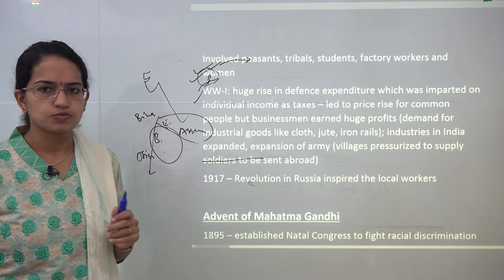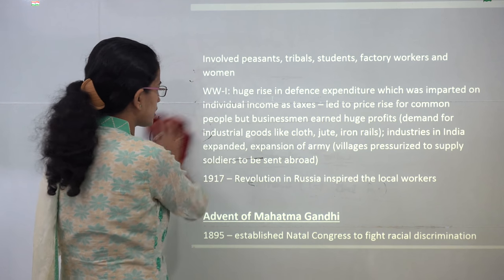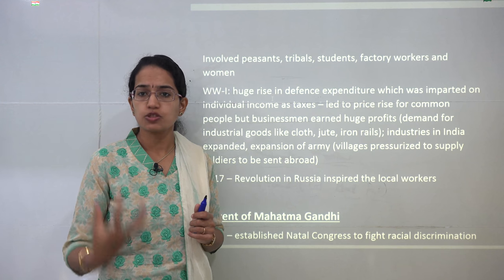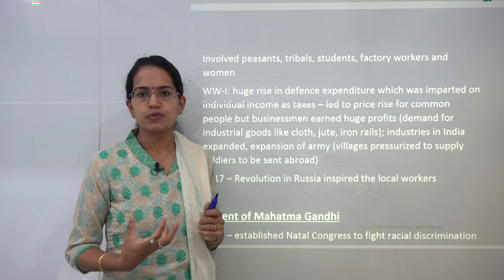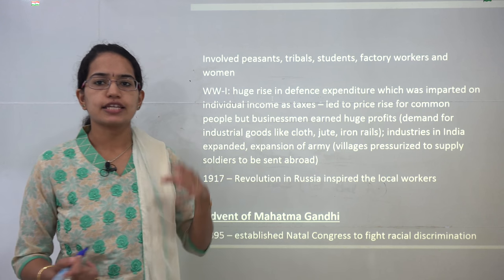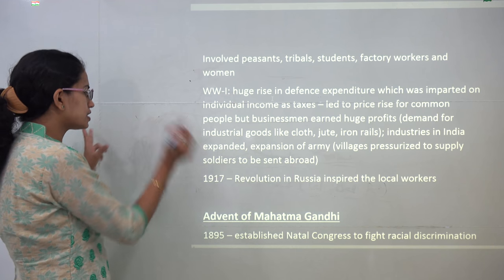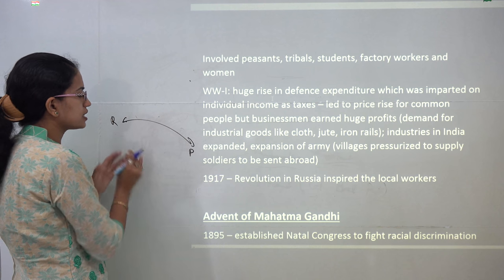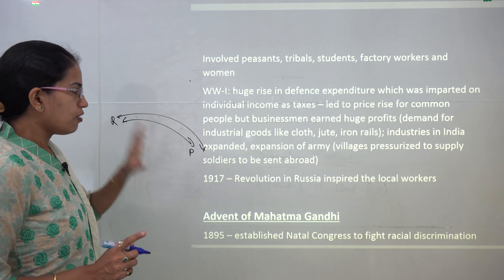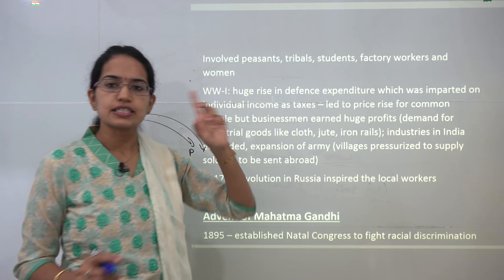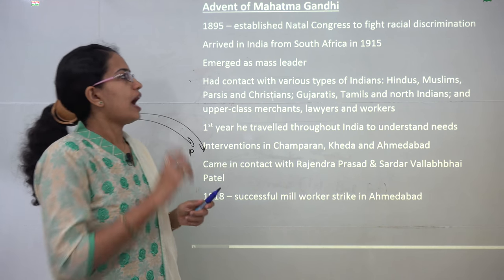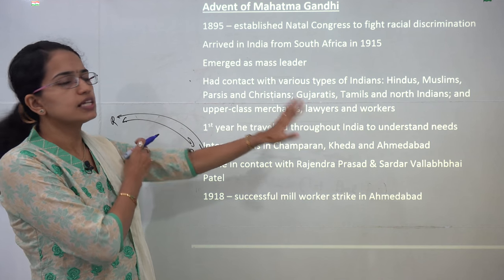There was now a growth of mass movement. It was the time of the First World War, and during it there was huge expenditure on defense. Everything required for defense — clothes, jute bags, iron products, rail lines — was in great demand. Businessmen were making good profits but numerous taxes were imposed on the common man, widening the divide between rich and poor. During this time, Mahatma Gandhi came back to India from South Africa in 1915 and emerged as a mass leader, with contacts across various religious communities, merchants, workers, and the upper class.